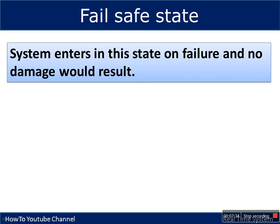In traditional systems, safety and reliability are two independent issues, but in real-time systems both are addressed together through the concept of a fail-safe state. Whenever a system fails, in order to avoid damage it will enter a fail-safe state. However, not all real-time systems have a fail-safe state — for some systems this state exists, but for others it does not.